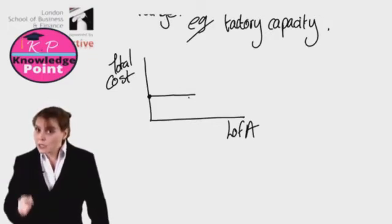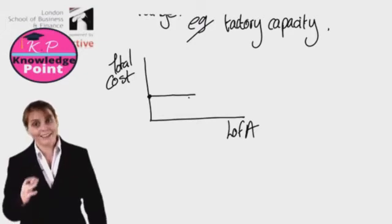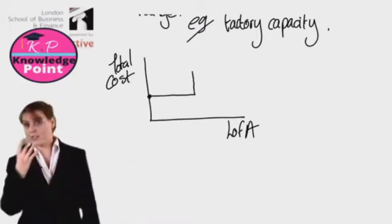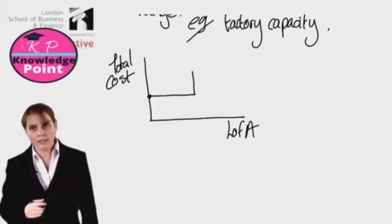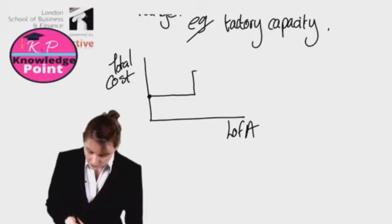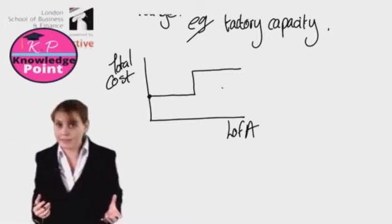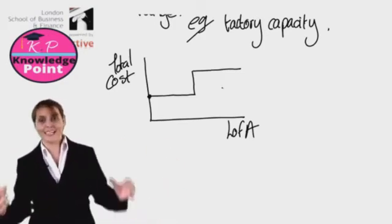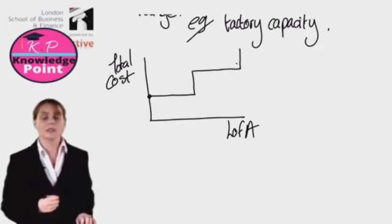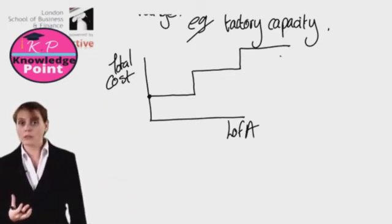However, once we get to a certain level of activity — in our example, that's a thousand units — once our level of activity goes above a thousand units a day, we are going to have to rent a second factory. So our fixed costs will increase to some new higher level. Then as our level of activity increases again above that threshold, our costs will remain constant at that new higher level — until again we get to another level of activity where perhaps we need to expand our factory again or employ new factory supervisors. So our step costs will increase again to another new higher level. And you can see why this is called a step cost.